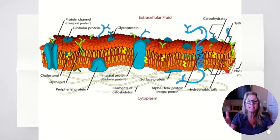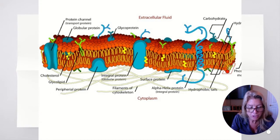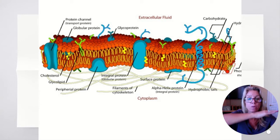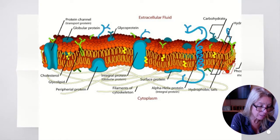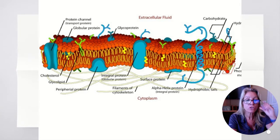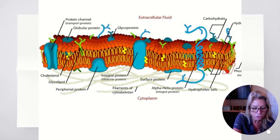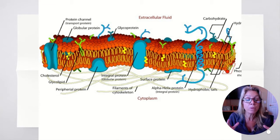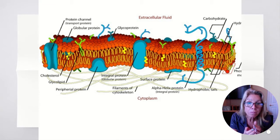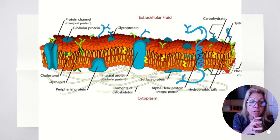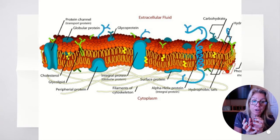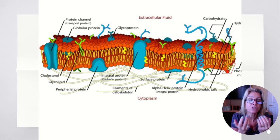The cell membrane is responsible for dynamic homeostasis between the cell's external and internal environment. Remember, cells are small because you need a large surface area per volume — the smaller the cell, the greater the surface area per volume — because that's where all exchange takes place.